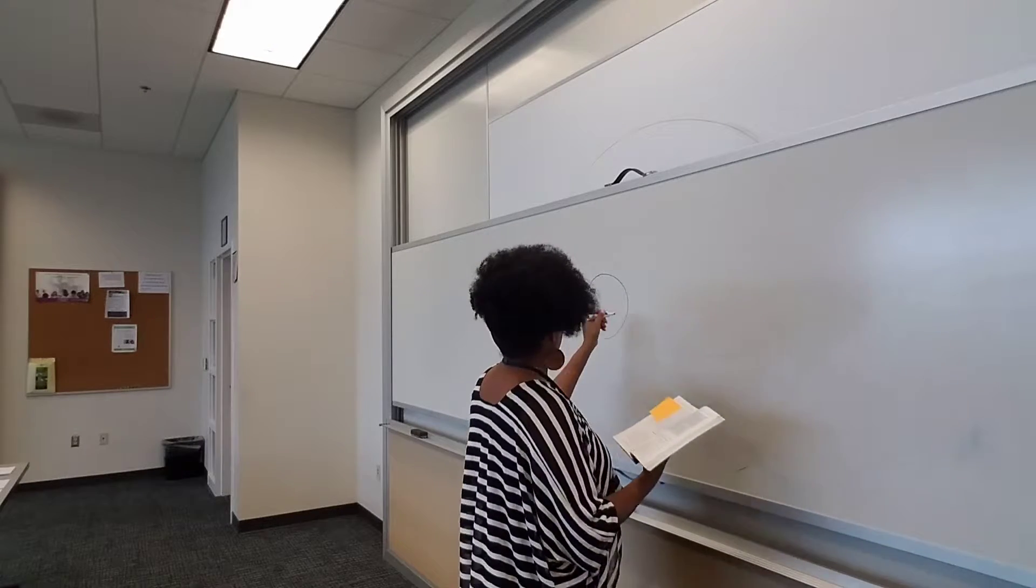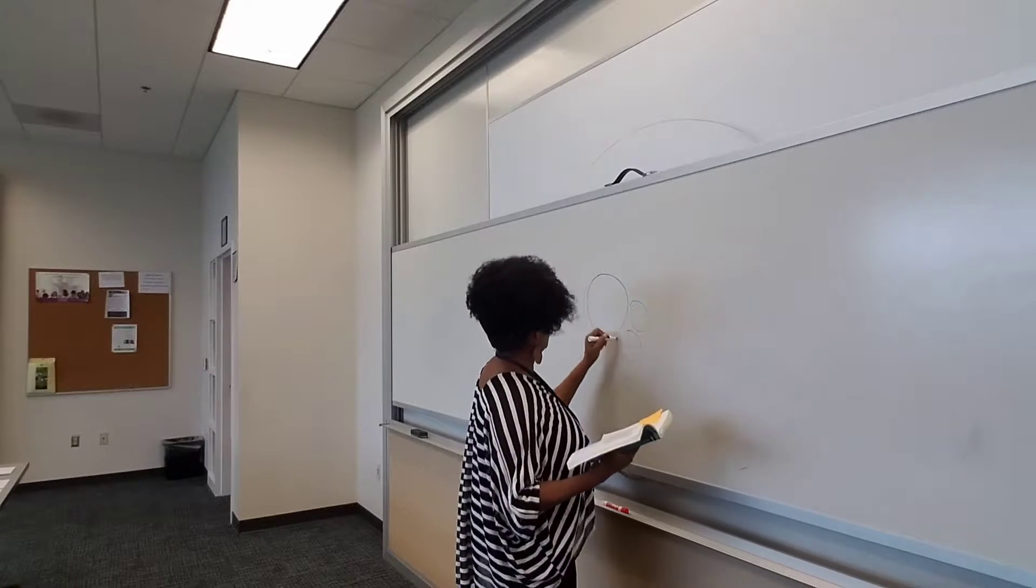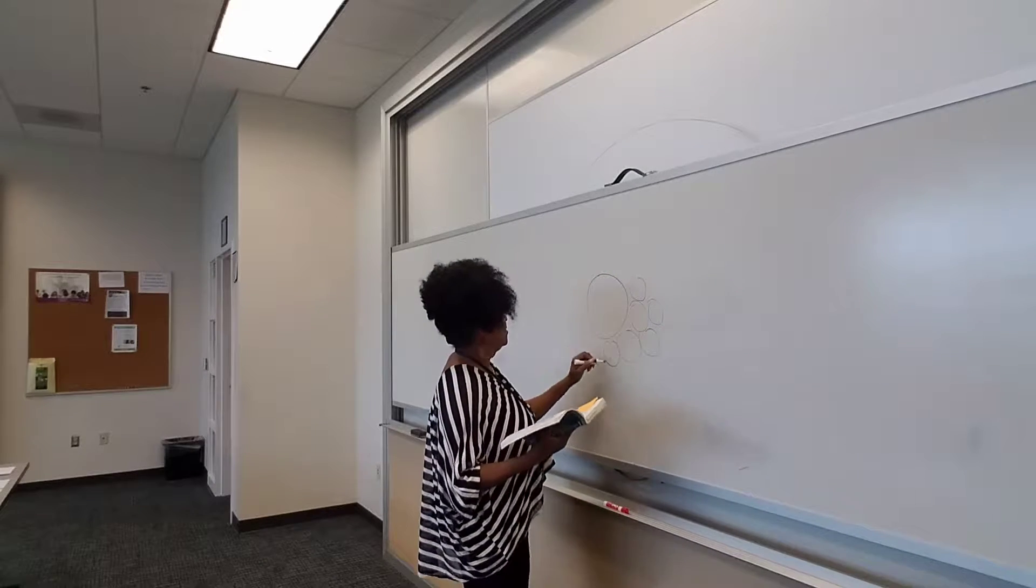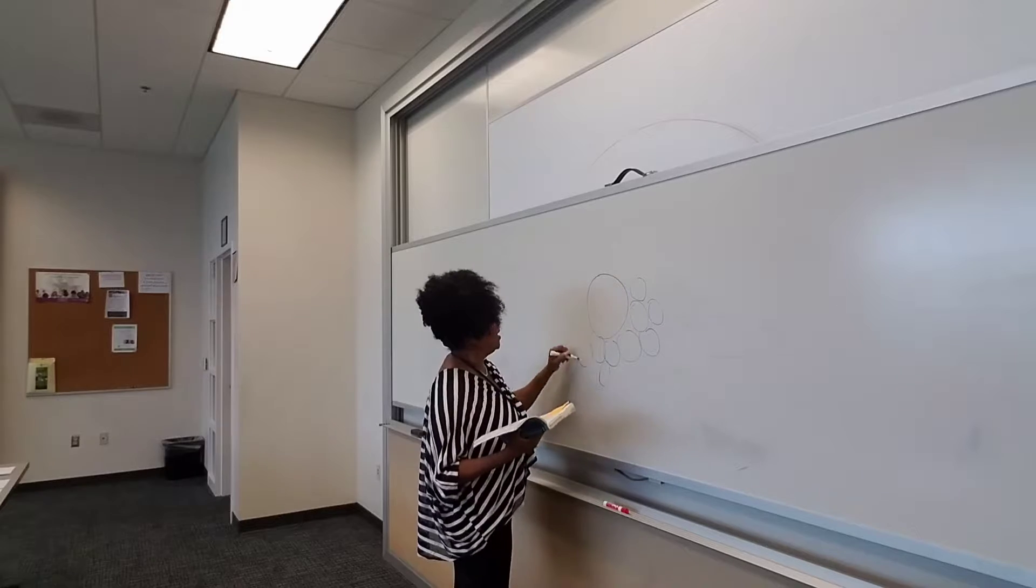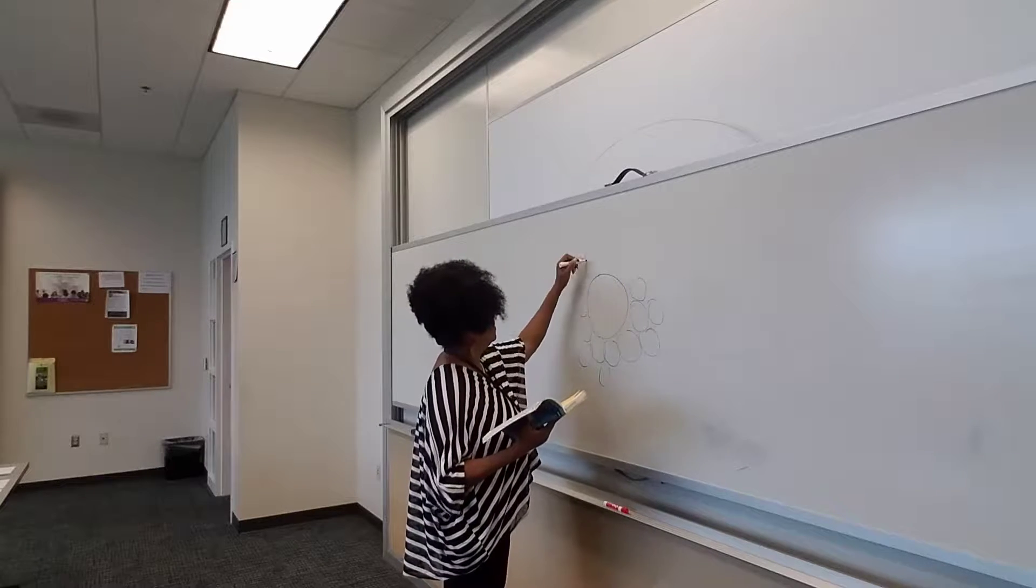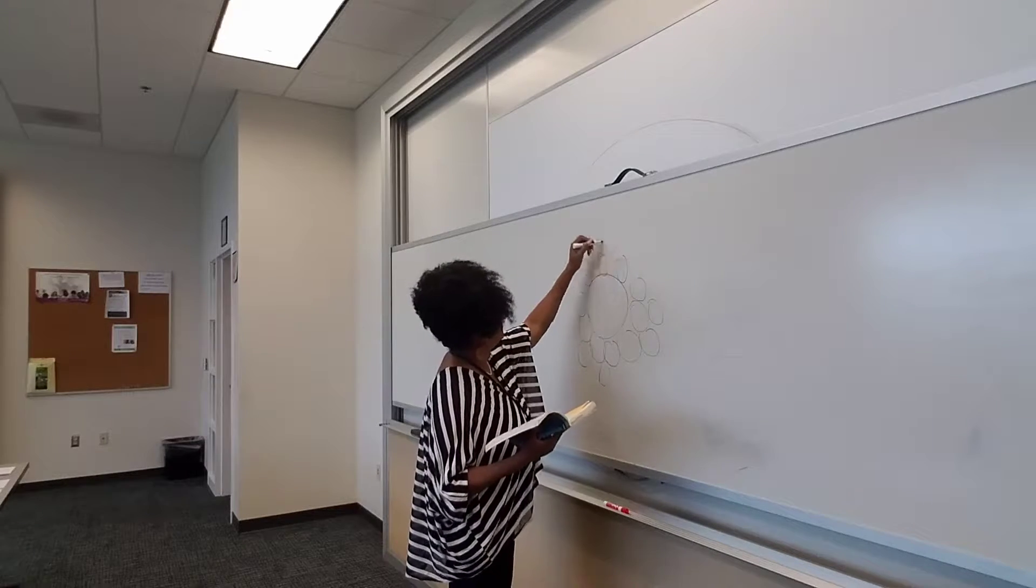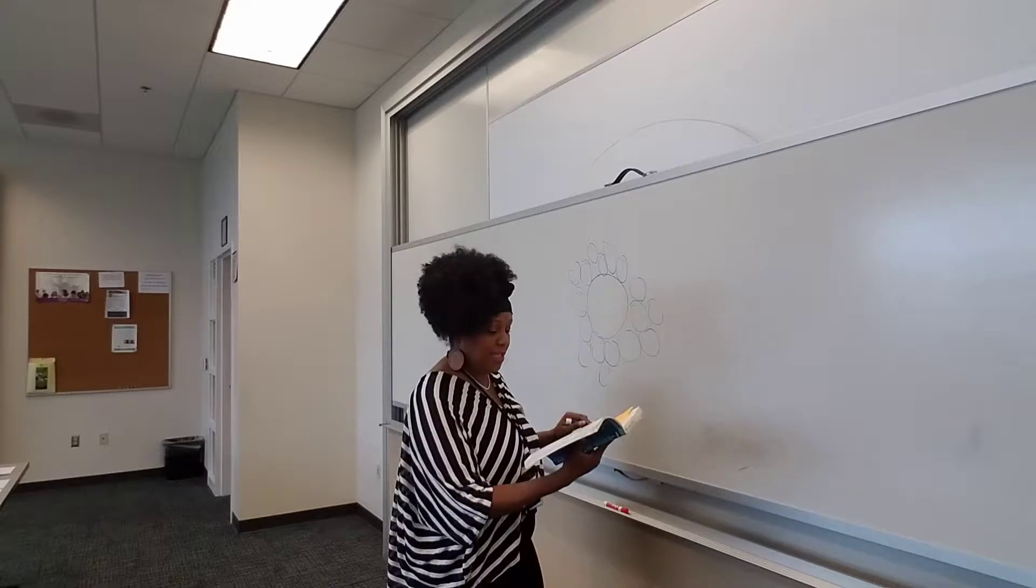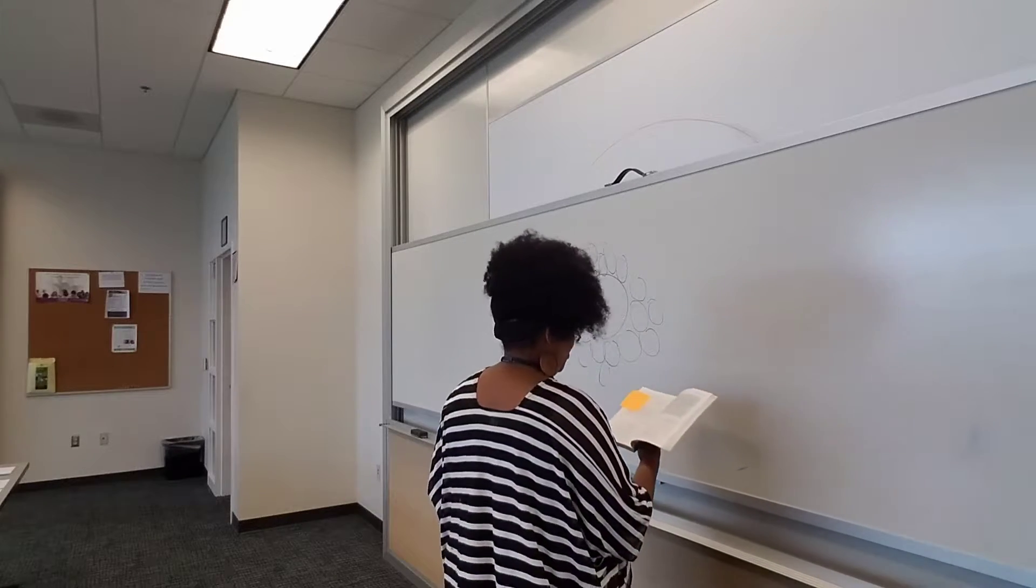Then you're going to draw a number of circles around it. No particular order. Just random circles. And in those circles, you're going to think about the persons with whom, okay, of course, this is you.